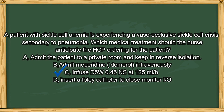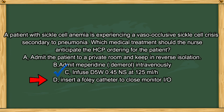The answer is C. Increasing IV fluid reduces the viscosity of blood, therefore preventing further sickling due to dehydration. Option A is not necessary because other patients will not affect this crisis. Option B — meperidine is no longer recommended for long-term pain management because it can cause seizures as a side effect. Option D is incorrect — while we do need to closely monitor intake and output, there is no reason to insert a Foley catheter.